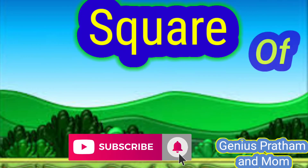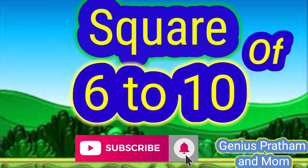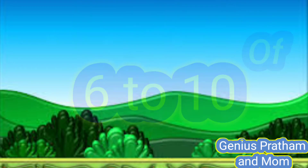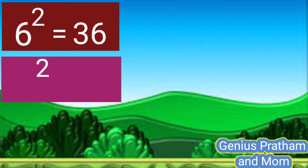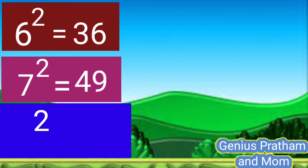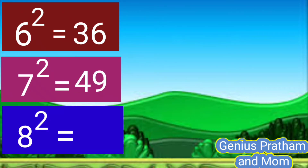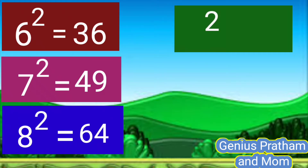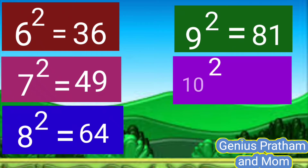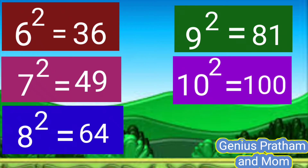Now square of 6 to 10 numbers. Square of 6 is 36. Square of 7 is 49. Square of 8 is 64. Square of 9 is 81. Square of 10 is 100.